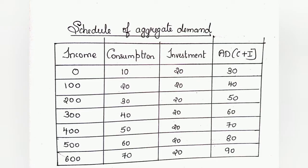As you can see in the schedule, we have four columns: income, consumption, investment, and AD — which is aggregate demand equal to consumption plus investment. At the first stage, income is zero, consumption is 10, investment is 20, so aggregate demand is 10 plus 20, which gives you 30.